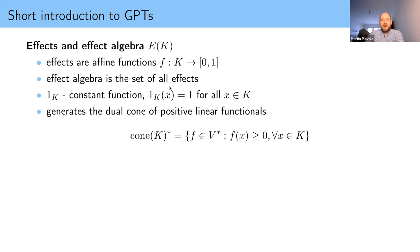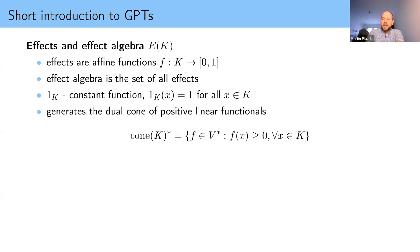The effect algebra is the set of all effects. One of the most notable elements is the constant function that always gives you one — it's affine, maps to the interval zero-one, and will appear later. The effects generate the dual cone, which is the cone of all positive functionals on the state space. The effect algebra is another starting point for GPTs; you can start from the state space, which I prefer because compact convex sets are easier to explain, or you can start from whichever side you want — it's personal preference.